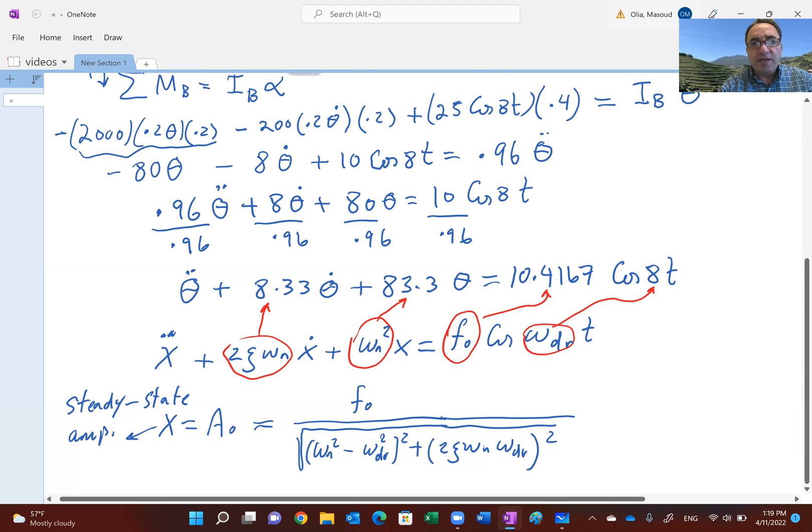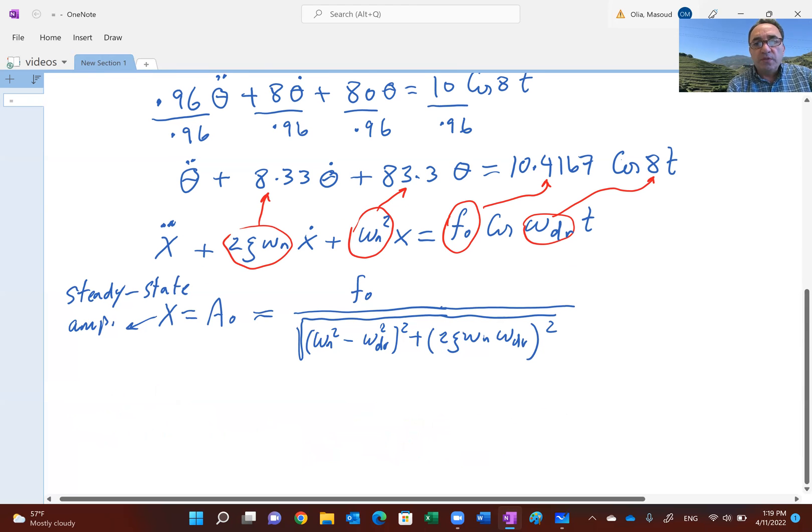We don't even have to find the damping ratio zeta. Look, 2 zeta omega_n is 8.33, your omega_dr is 8, that's the driving frequency. Your omega_n squared is 83.3, which actually, if you take the square root of that, that's about 9.13 radians per second.